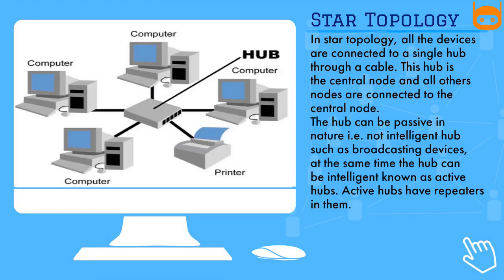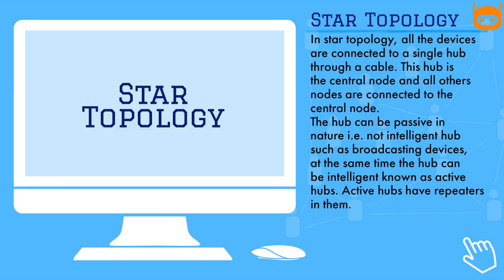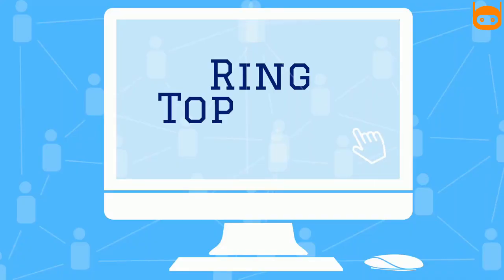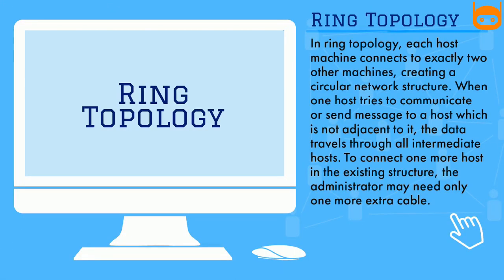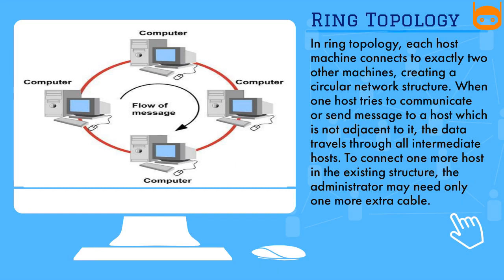In star topology, all devices are connected to a single hub through a cable. This hub is the central node, and all other nodes connect to it. The hub can be passive, such as a broadcasting device, or intelligent, known as an active hub. Active hubs have repeaters in them.